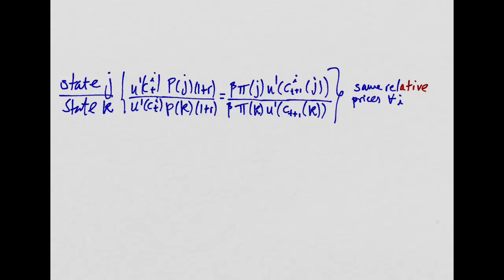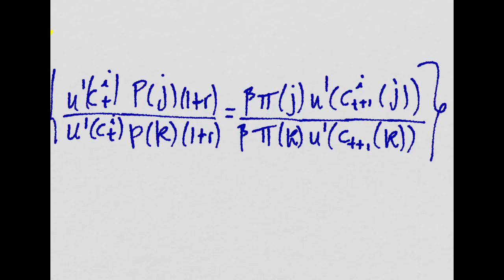Let's take a step back and look at two different states of the world, which we call J and K. And we divide the two Euler equations for these two states, one divided by the other.